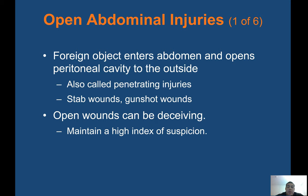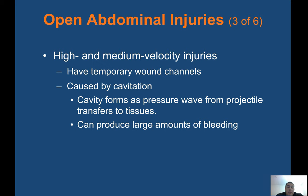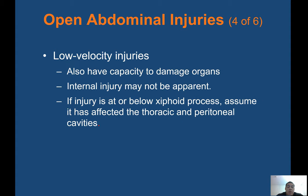Open abdominal injuries occur when a foreign object enters the abdomen and opens the peritoneal cavity to the outside. Also called penetrating injuries — stab wounds, gunshot wounds. Open wounds can be deceiving, so maintain a high index of suspicion. Damage depends on velocity: low velocity injuries include knives or other edge weapons; medium velocity injuries include smaller caliber handguns and shotguns; high velocity injuries include high-powered rifles and handguns. High and medium velocity injuries have temporary wound channels caused by cavitation, where a cavity forms as a pressure wave from the projectile transfers to tissues, producing large amounts of bleeding. Low velocity injuries also have the capacity to damage organs and internal injury may not be apparent. If the injury is at or below the xiphoid process, assume it has affected both the thoracic and peritoneal cavities.